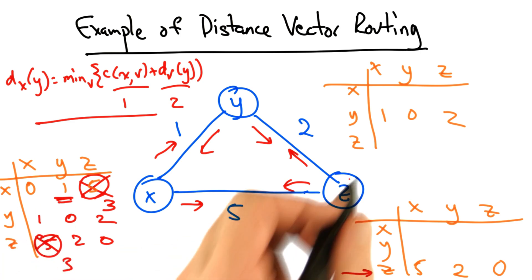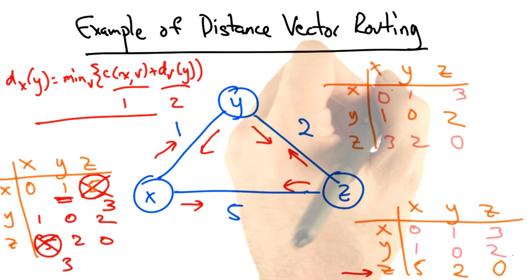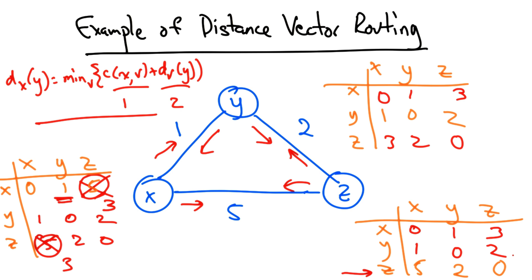We can repeat this exercise at other nodes as they receive distance vectors from other nodes in the topology, and quickly every node in the network has a complete routing table.